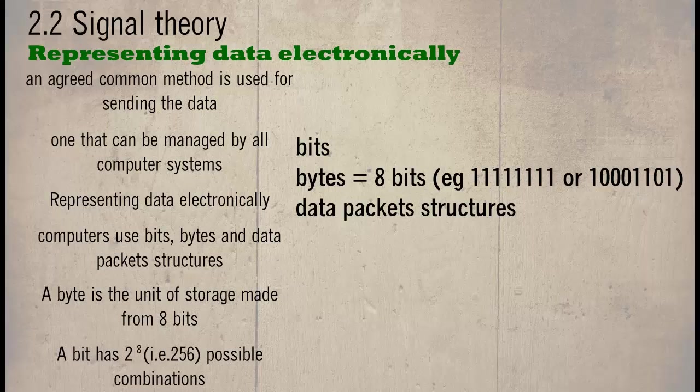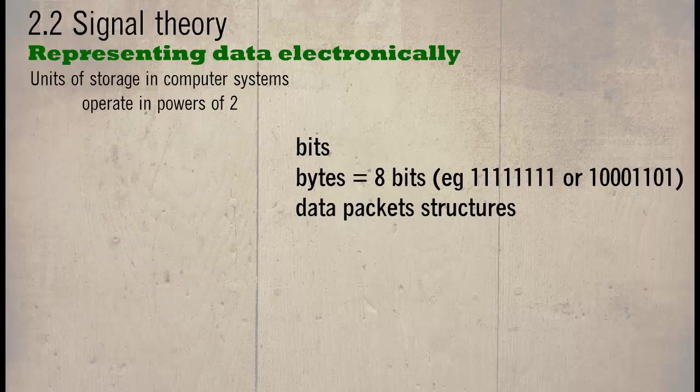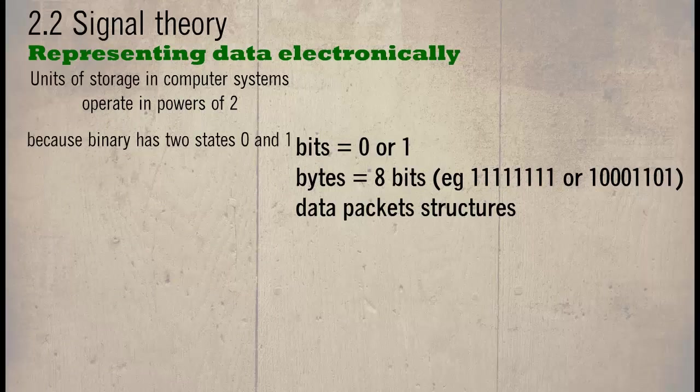A bit has 2 to the power of 8, i.e. 256 possible combinations. Units of storage in computer systems operate on the power of 2 because binary has two states: 0 and 1.